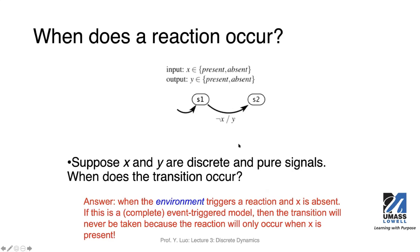If you think about a more concrete example: if you don't have changes on the input signal, if there's no car arriving, then your system state will not change because your input signal is absent.